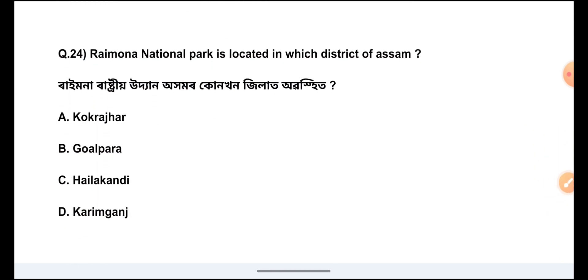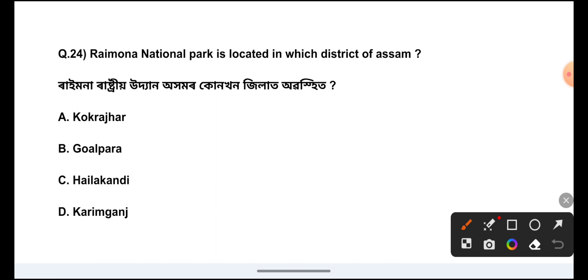Question Number 24: Raimona National Park is located in which district of Assam? The answer is Option A, Kokrajhar.